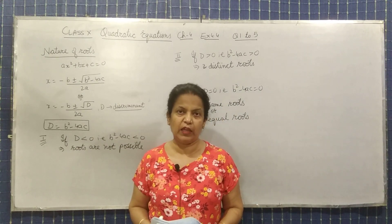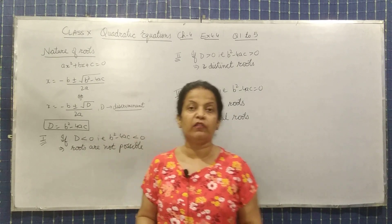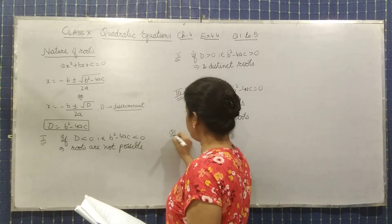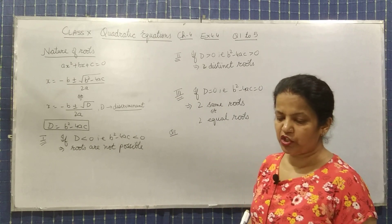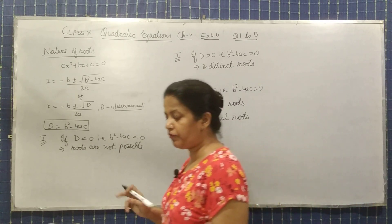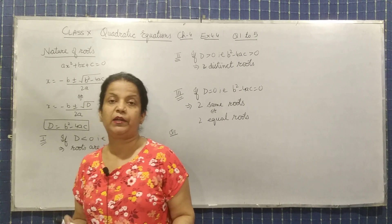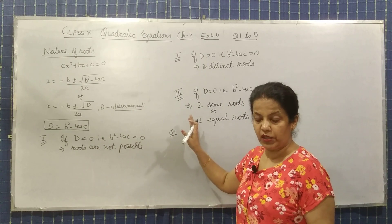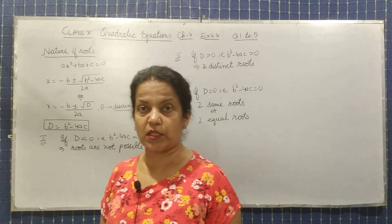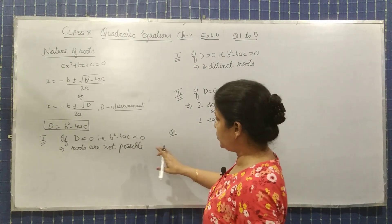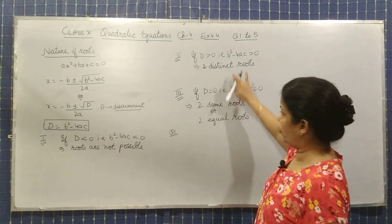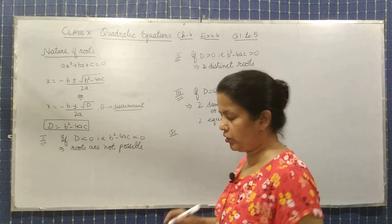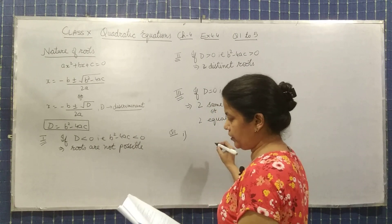Now we will take the questions from exercise 4.4. Question 1 is: Find the nature of the roots of the following quadratic equation. If root exists, find them. We have to first find the nature, means out of these 3 options. And then if root exists - when will it exist? When roots are distinct or same. If it exists, then you have to find them also.